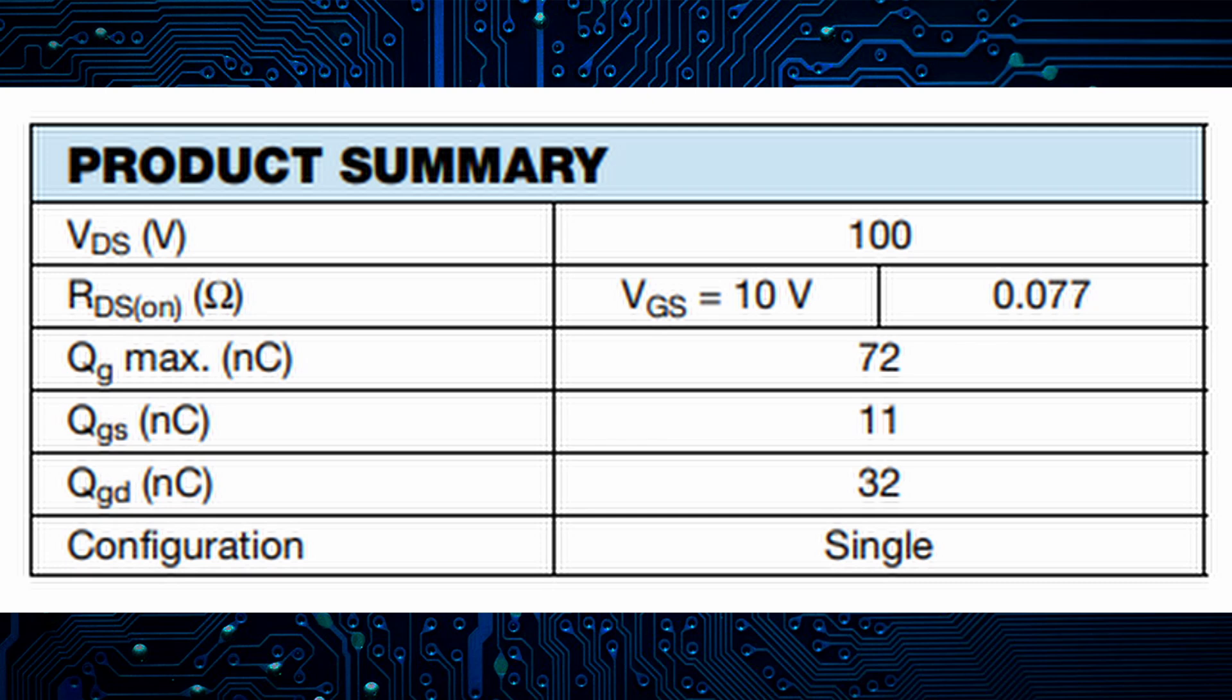Next, we have the drain to source voltage, specified at 100V. This value will vary between MOSFETs. Some will support higher voltages, while others have lower voltages. So always check that our model in question can handle the load we need.